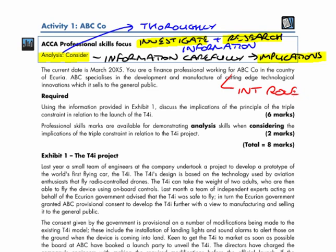Our requirement says, using the information, discuss the implications — which is actually the wording we have for the professional skill of consider — the implications of the principle of the triple constraint, in relation to the launch of the T4I. So the first thing I'd want to remind myself of is: what is the triple constraint? I want to find any information around the scope, the timeframe, and the budget of the project.